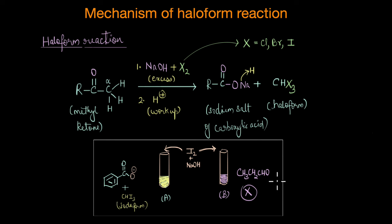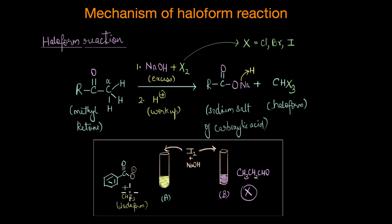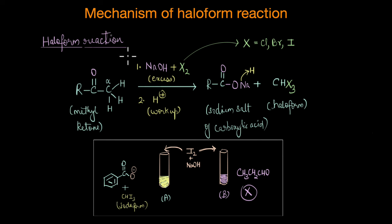When we take these two in different test tubes and add iodine in the presence of a base like NaOH, a smelly yellow precipitate of iodoform is formed with acetophenone, whereas no such reaction takes place with propanal. This formation of the yellow precipitate confirms the oxidation of acetophenone to the corresponding benzoate ion, showing how this simple test can powerfully distinguish methyl ketones from other compounds.